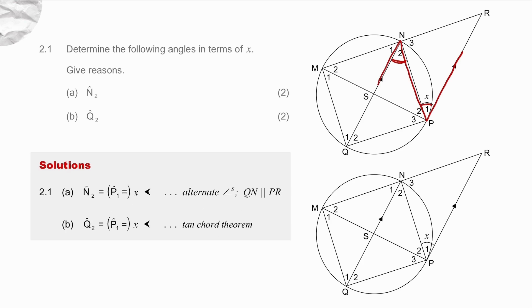The second one they ask you for is angle Q2. Angle P1 is x. It's an angle between a tangent and a chord, so you go from either side of the chord up to the circumference. So angle P1 is equal to angle Q2 because of the tan chord theorem. Angle P1 is x so that means angle Q2 is x because of tan chord theorem.